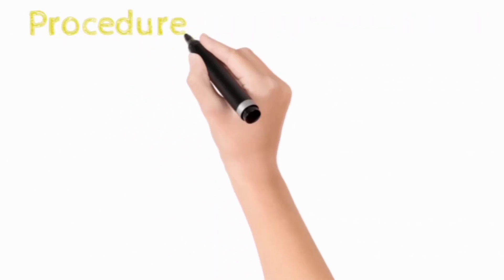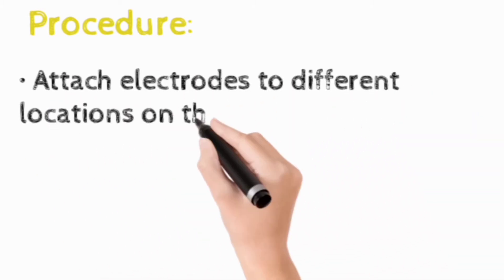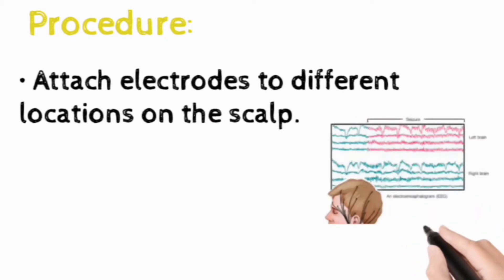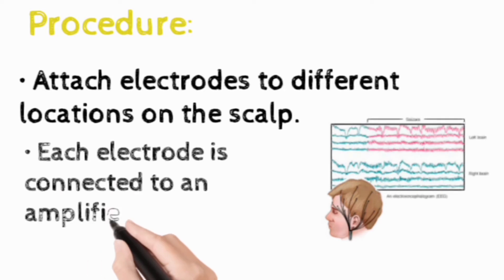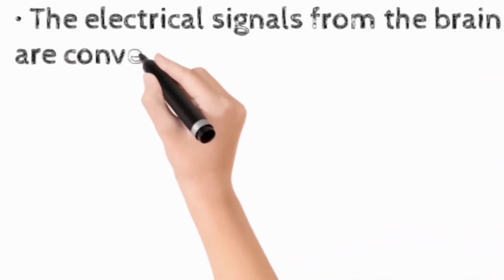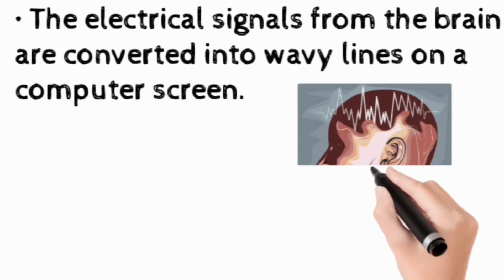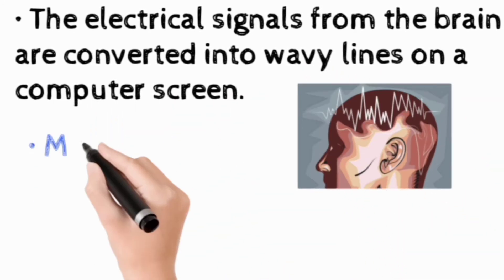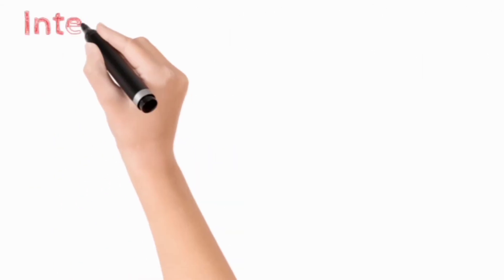Now let's move towards the procedure of EEG testing. In EEG testing, electrodes are attached to different locations on the scalp. Each electrode is connected to an amplifier or an EEG recording machine. The electrical signals from the brain are converted into wavy lines on a computer screen. Most EEG tests take about one hour for their completion.